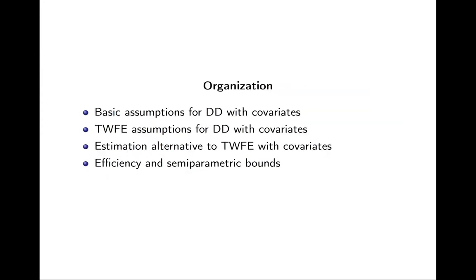We're going to look at the basic assumptions for diff-in-diff with covariates, the two-way fixed effects assumptions for diff-in-diff with covariates, and the estimation alternatives to two-way fixed effects with covariates. There is also a fourth part of the paper about standard errors where he derives semi-parametric bounds, but I'm not going to discuss that.